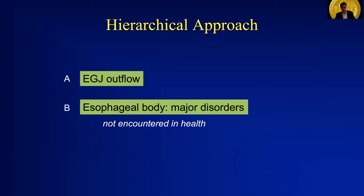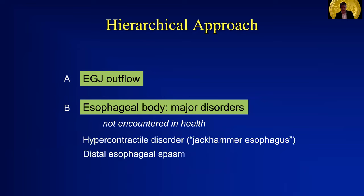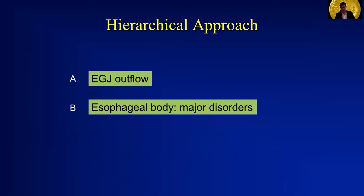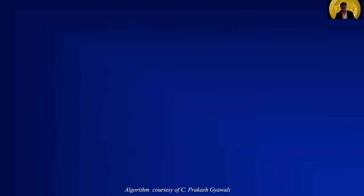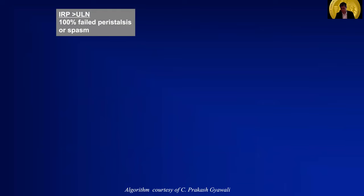Moving on from esophagogastric junction outflow, now we assess the peristaltic body. First we look for the major disorders of peristalsis — those are hypercontractile disorder, or jackhammer esophagus, distal esophageal spasm defined by the distal latency, and absent contractility, or complete absence of peristalsis where all swallows have a DCI less than 100 mmHg. Then we have the minor disorders of peristalsis: ineffective esophageal motility and fragmented peristalsis. And finally, essentially normal manometry if it doesn't fit into any of those other categories.